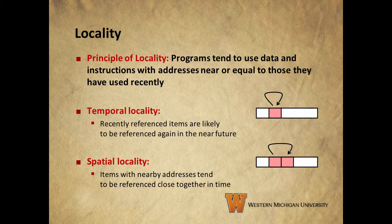The principle of locality states that programs tend to use data and instructions with addresses near or equal to those they've used recently. We break this up into two concepts: temporal locality, which means that recently referenced items are likely to be referenced again in the near future, and spatial locality, which means that items with nearby addresses tend to be referenced close together in time.